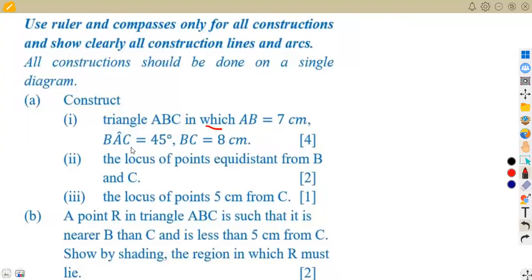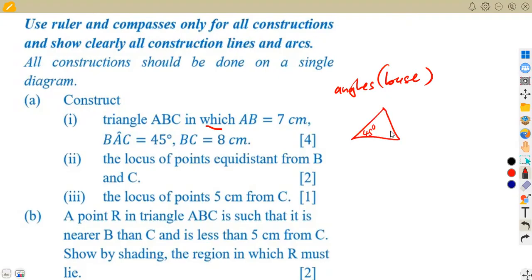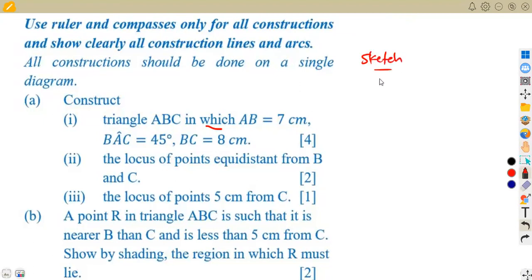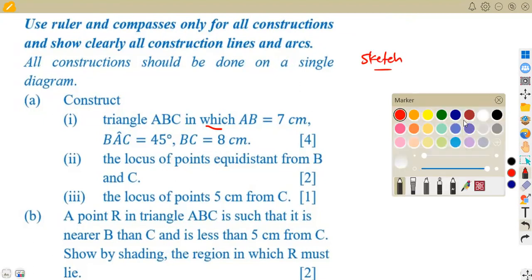Construct triangle ABC in which AB equals seven centimeters, angle BAC equals 45 degrees, and BC equals eight centimeters. Always try by all means to make sure that the angles are found on the best — what I'm trying to say is: on your sketch, try to make this angle 45 degrees. Not on your sketch with 45 degrees on the wrong side — try by all means to have your angles correct. This is just a sketch to help you with your construction.